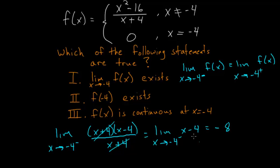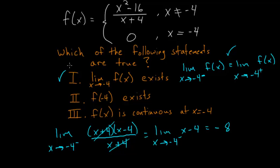And if we take the limit as x approaches negative 4 from the right side, we also get a number that approaches negative 8. So we know that statement 1 is true, and the limit as x approaches negative 4 of the function does exist.